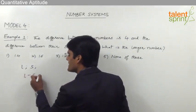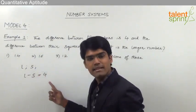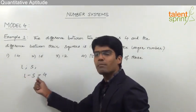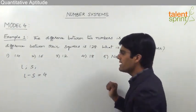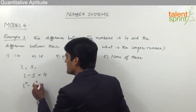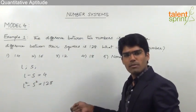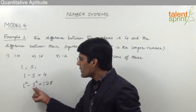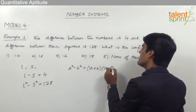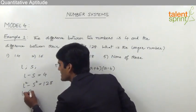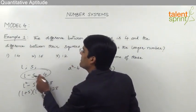We take L - S = 4 because larger minus smaller equals 4; if we took S - L it would be -4. The second condition is the difference between their squares: L² - S² = 128. From our formulae, a² - b² = (a + b)(a - b), so this expands to (L + S)(L - S) = 128. We know L - S = 4.